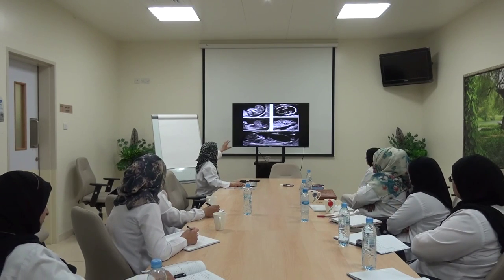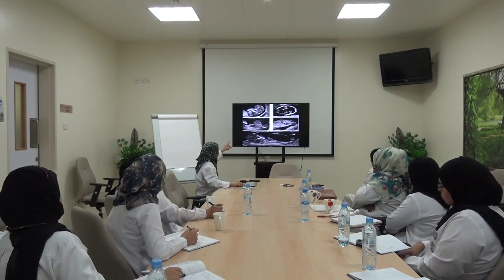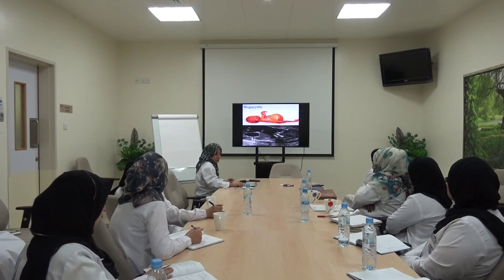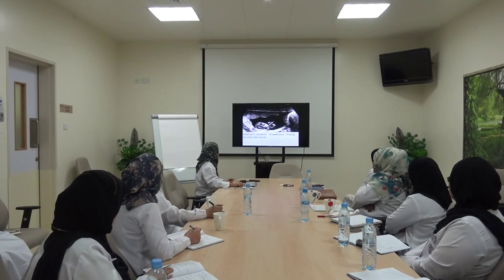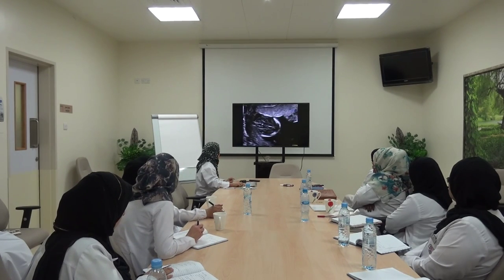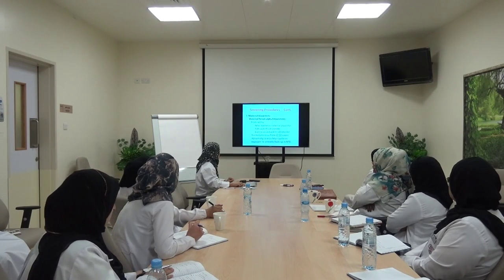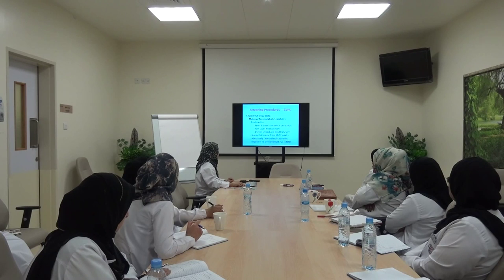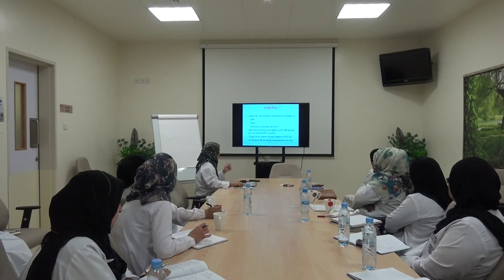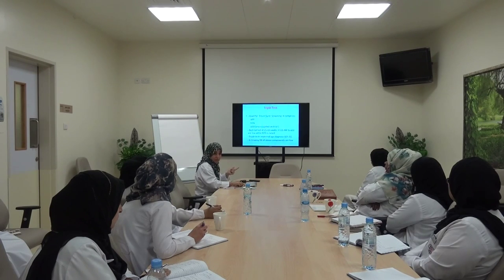The major structural anomalies detectable antenatally at 12 weeks include anencephaly, exomphalos, megacystis, spina bifida, holoprosencephaly, and occipital meningocele. Other screening tests include maternal blood tests: alpha-fetoprotein for spina bifida, though the scan can also detect this. The triple test includes alpha-fetoprotein, beta-hCG, and conjugated oestriol, with a detection rate of only 60%, which is why it is no longer favoured. The quadruple test is the triple test plus inhibin A. The double test is used during the first trimester 12-week scan.